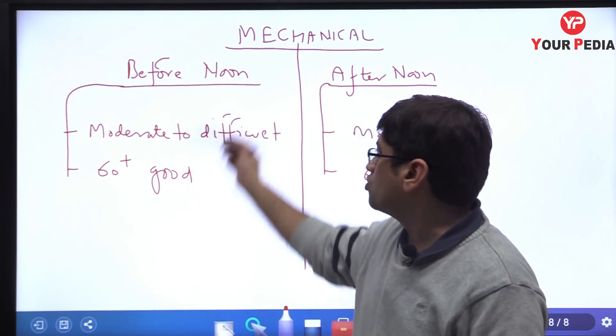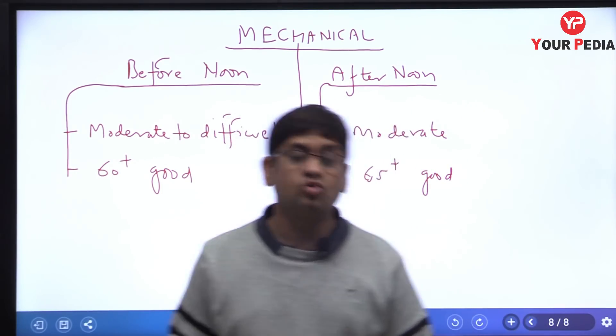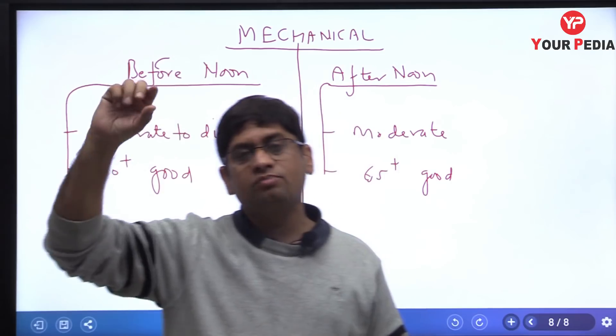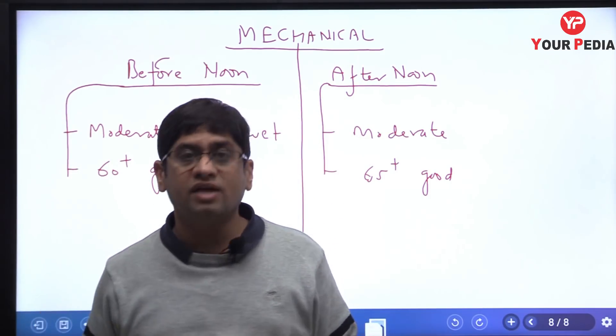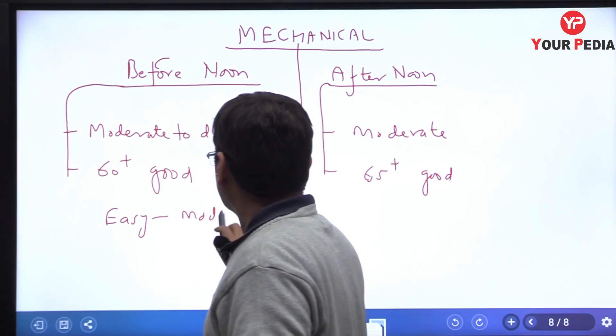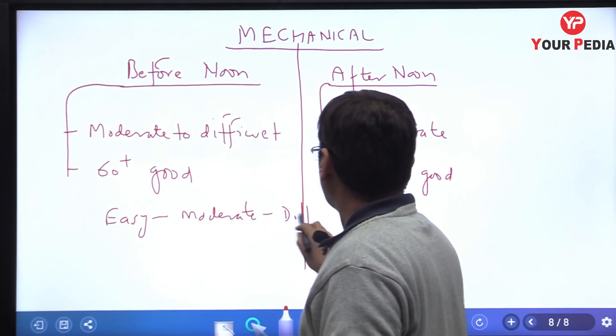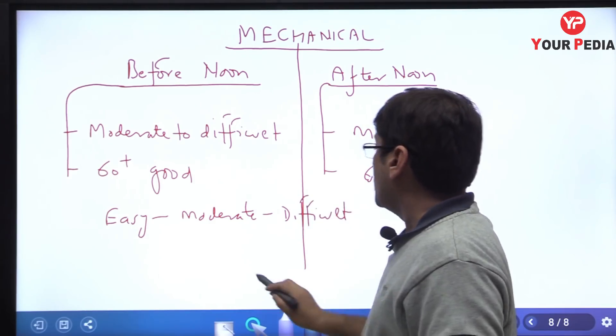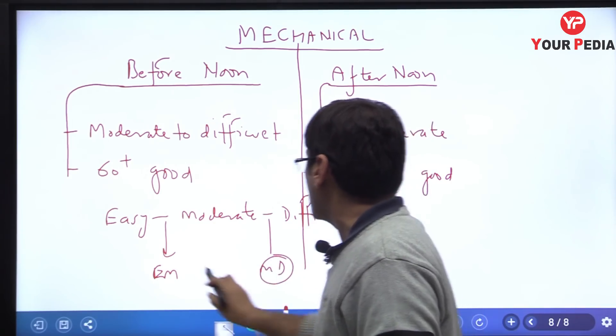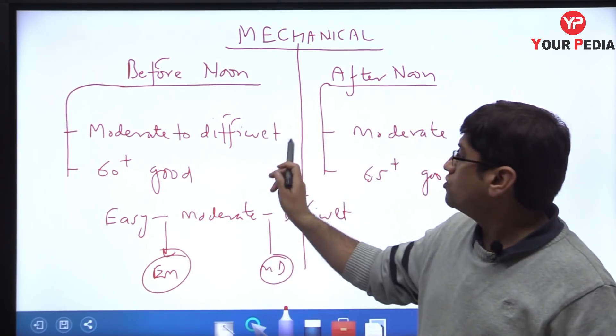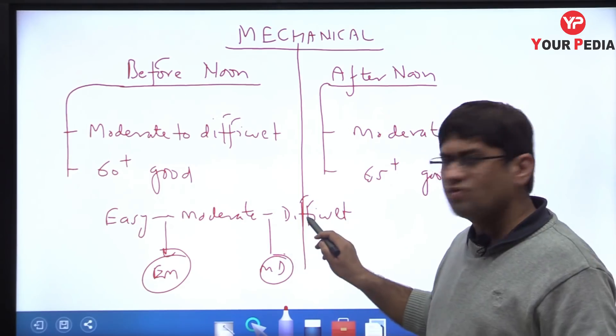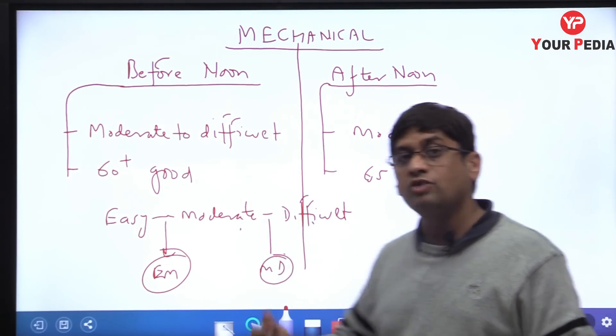Before noon was moderate difficult to difficult level. If I categorize: easy, moderate, difficult. Easy and moderate, there's a category. Moderate and difficult, there's also one category. In ascending order, there is easy paper, then there is moderate paper and then there is difficult. I divide in these three groups, and I have easy to moderate and moderate to difficult. Before noon was moderate to difficult. That means it was not very difficult, it was not even moderate, but it was moderate to difficult before noon.